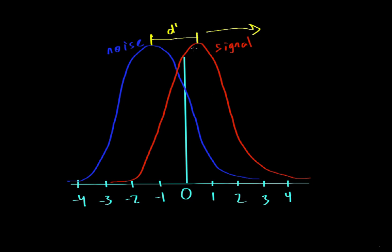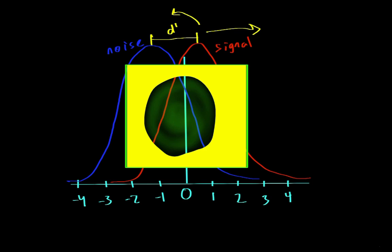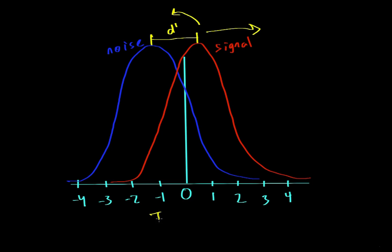But on the other hand, if the signal distribution was shifted over to the left, then d prime would be super small and it'd be a more difficult task. So the x-axis here, we have the intensity of the stimulus. So that would be how easy the stimulus is to distinguish from the background.